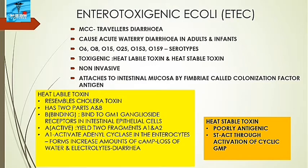Enterotoxigenic E. coli (ETEC) is the most common cause of traveler's diarrhea. It causes acute watery diarrhea in adults and infants. The most common serotypes involved are O6, O18, O15, O25, O153, and O159. It is toxigenic and non-invasive. The toxins involved are heat-labile toxin and heat-stable toxin. It attaches to intestinal mucosa via the fimbrial colonization factor.